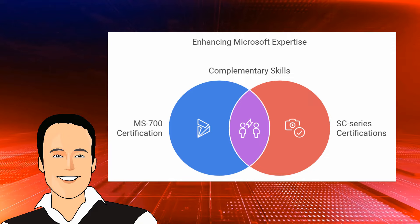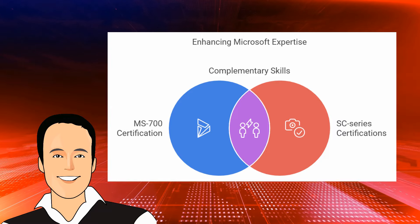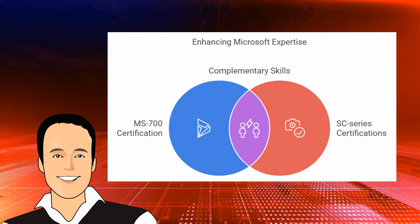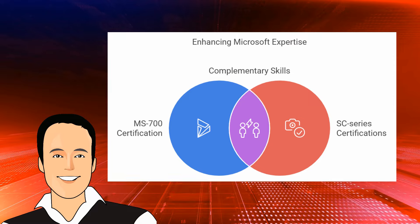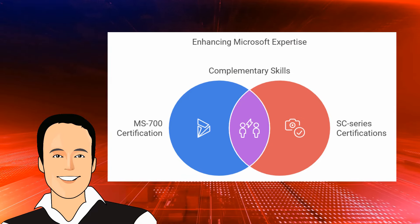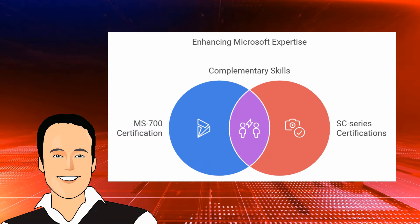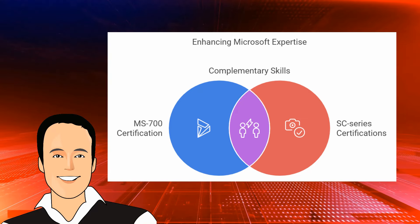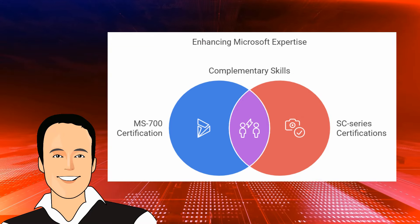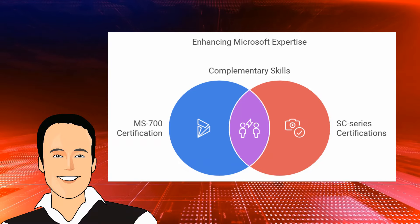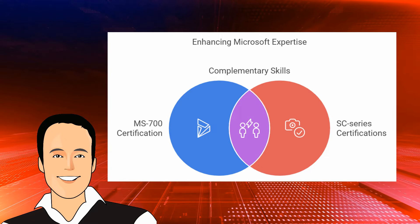There are additional certifications worth considering as well. The MS-700, Managing Microsoft Teams, is a great add-on after the MD-102. If you want to specialize in security, Microsoft has a series of security exams starting with SC — the SC-900 for beginners, followed by SC-100, SC-200, SC-300, and SC-400. These security certifications intermingle with both Azure and Microsoft 365 paths. Check out my dedicated security paths video for a full strategy.